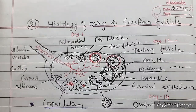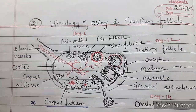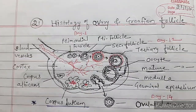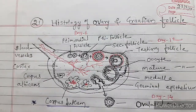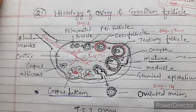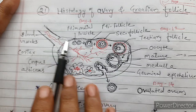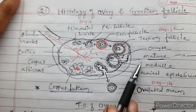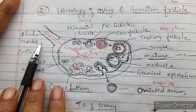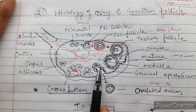Welcome students. In this period we are going to study about the histological structure of the ovary and the structure of the Graafian follicle. The diagram here is of the transverse section of the ovary. When you take the TS of the ovary you can observe this type of internal structure.